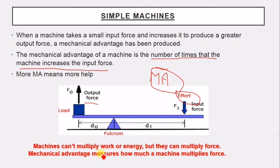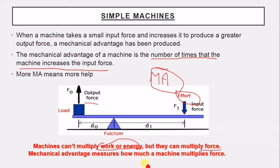Machines cannot multiply work or energy — but they can multiply force. What they change, what they modify, is the force. Mechanical advantage measures how much a machine multiplies force.